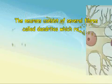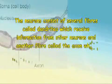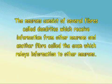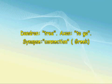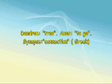The neurons consist of several fibers called dendrites, which receive information from other neurons, and another fiber called the axon, which relays information to other neurons. Dendron means tree in Greek. Dendrites are so called because they are structures which are tree-shaped. Dendrites have tiny spines on their surface, rather similar to leaves on a tree.